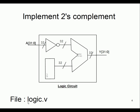Once we have that, start building a logic library in logic.v. Implement a 32-bit two's complement module using a 32-bit NOT gate and then a 32-bit adder with a static 1 connected to it — basically NOT(A) plus one — giving the two's complement of the number.